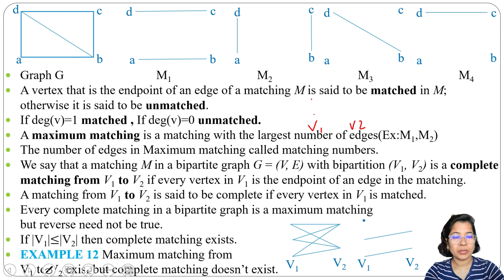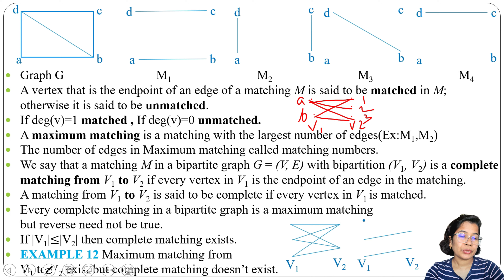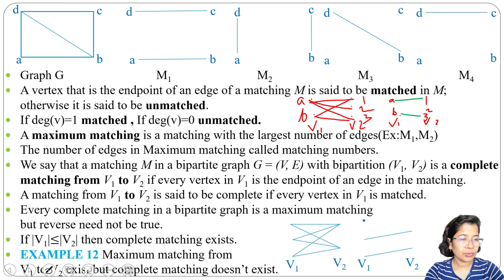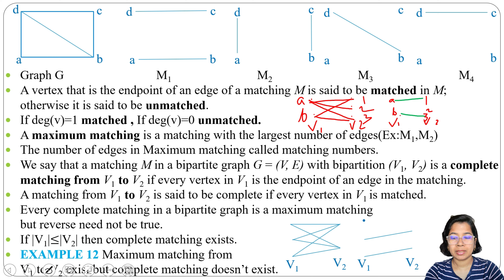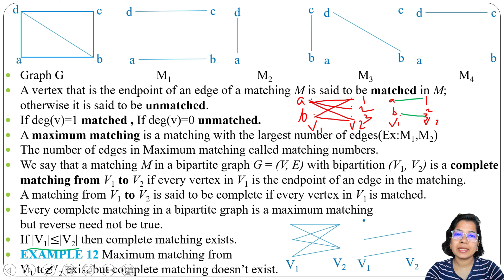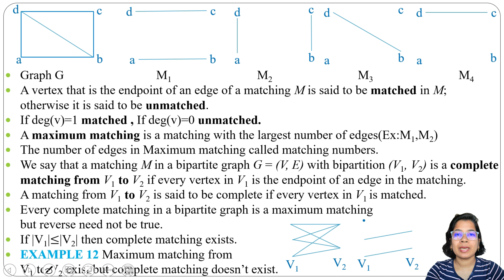Now suppose V1 has 2 vertices A and B, and V2 has 3 vertices 1, 2, 3. There is an edge from A to 1, A to 2, A to 3, and B to 1, B to 3. If we add edges A to 1 and B to 3, this is a complete matching since all vertices of V1 — both A and B — are matched. This confirms that the number of vertices in V1 must be less than or equal to V2 for a complete matching.